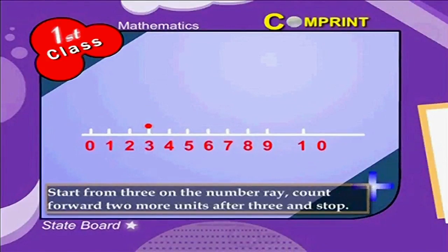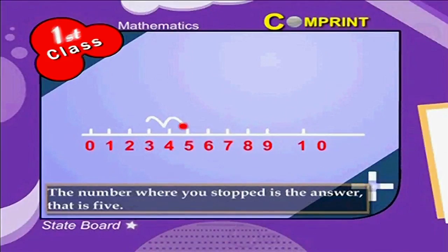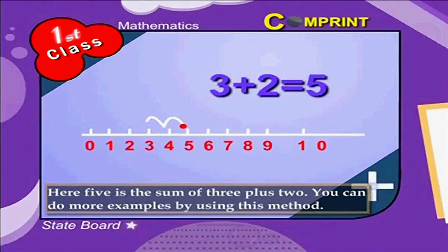Start from three on the number ray. Count forward two more units after three and stop. The number where you stopped is the answer, that is five. Here, five is the sum of three plus two. You can do more examples by using this method.